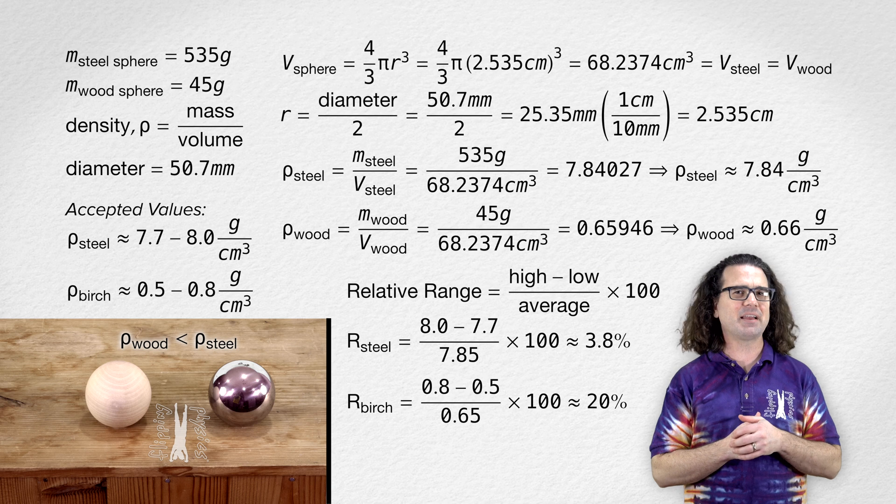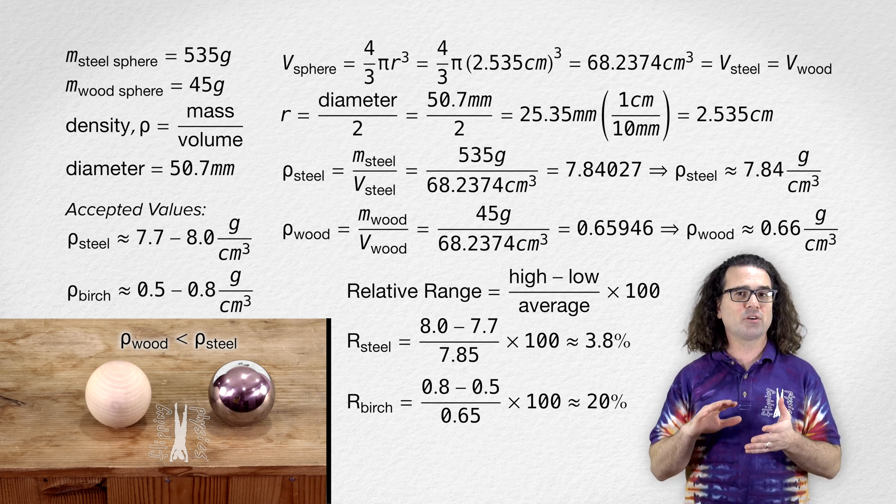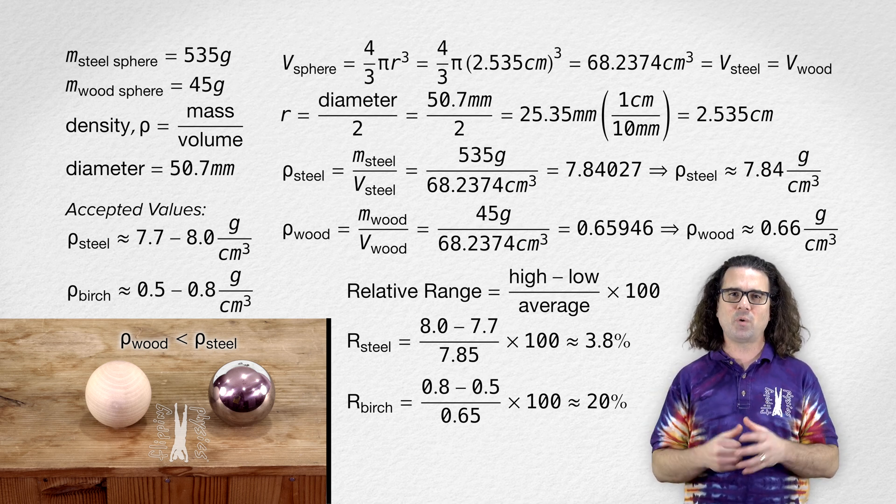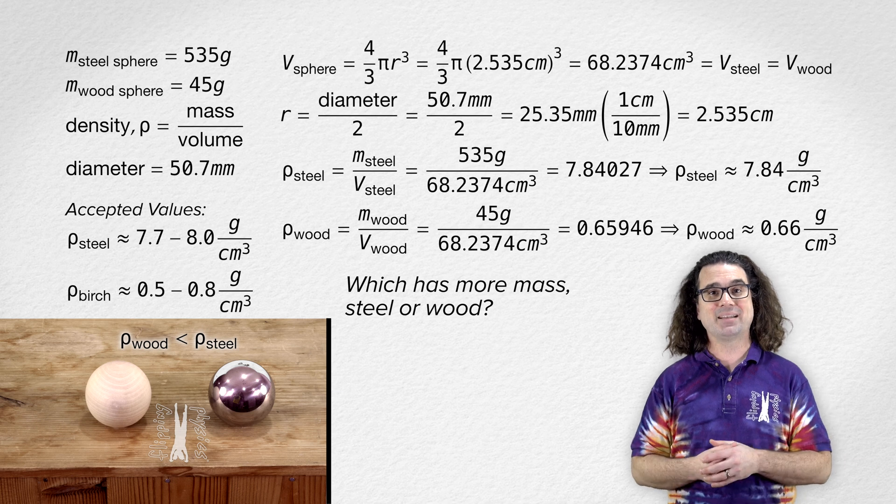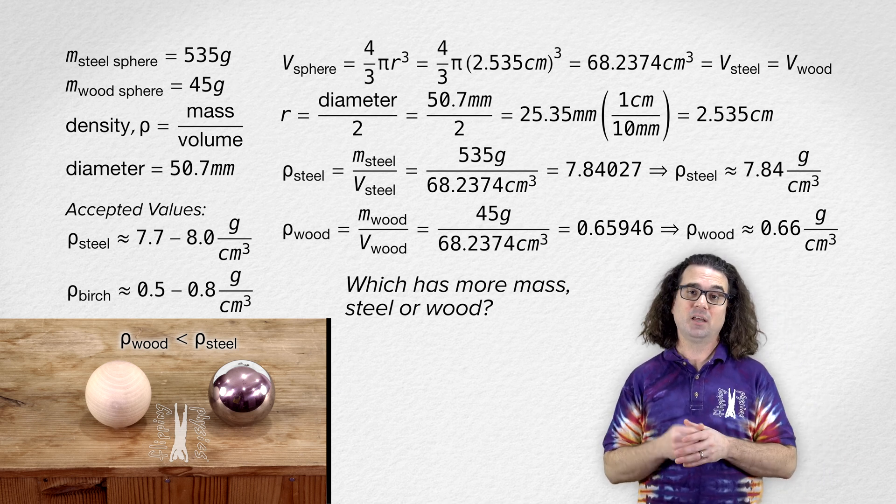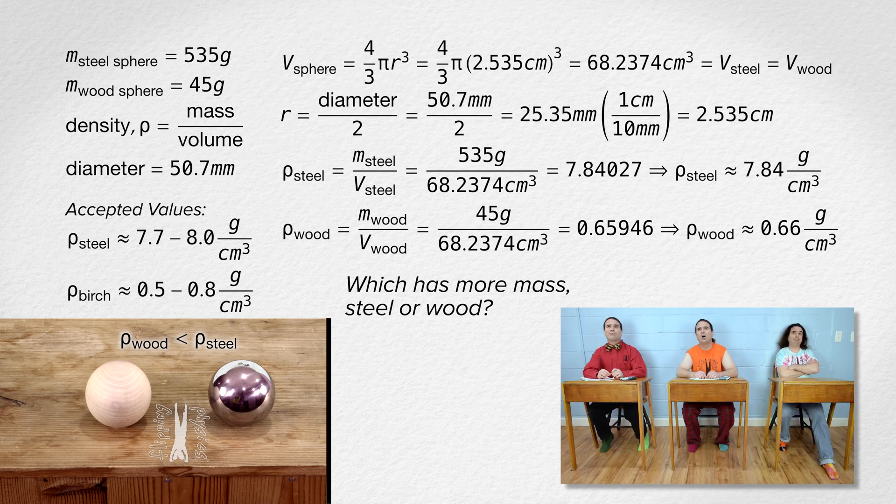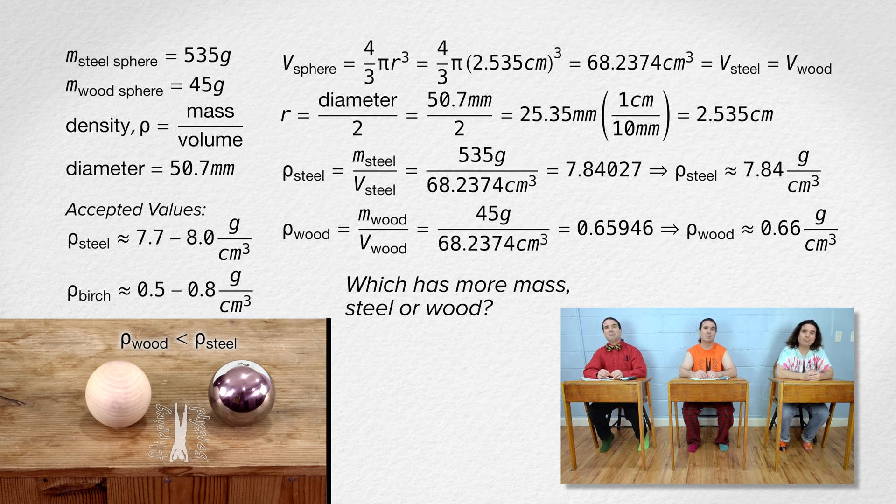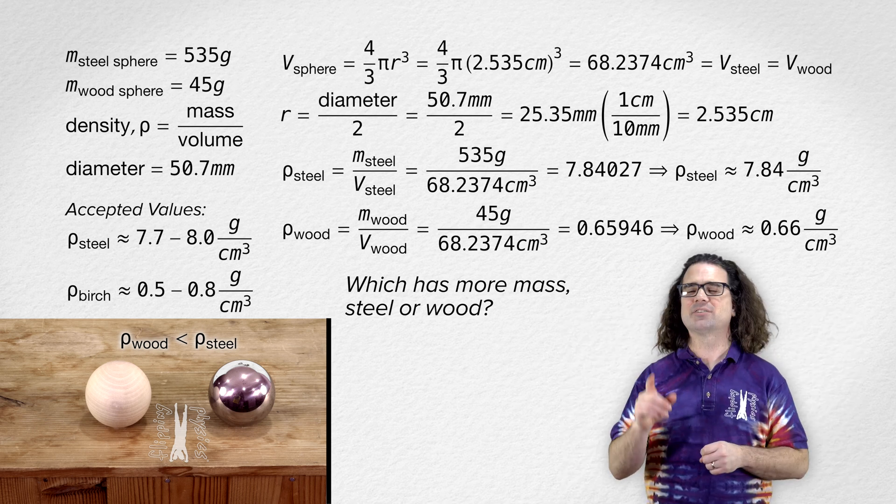Yeah. Billy, thank you for clarifying that. I just want to return for a moment to the original question. Which has more mass, steel or wood? Bobby, how would you answer that question now? I would say steel has a larger density than wood, which means steel has a larger mass per unit volume than wood. So, given the same volume, a steel object has more mass than a wood object. I like that answer.